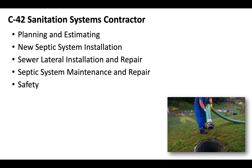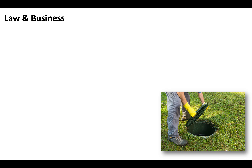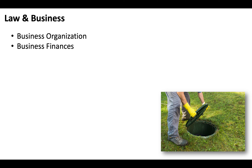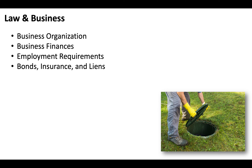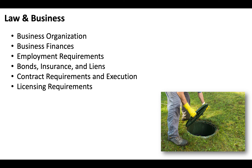Today we're just going to be focusing on the examination. As is the case in California, for everybody applying for a California contractor license under the C specialty, you need to pass a law and business exam. That's going to include sections on business organization, business finances, employment requirements, bonds, insurance, and liens, contract requirements and execution, licensing requirements, public works, and there'll be a section on safety.